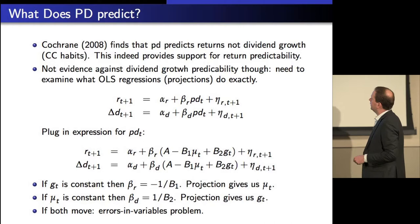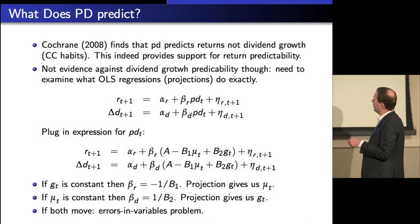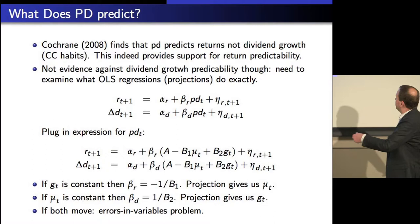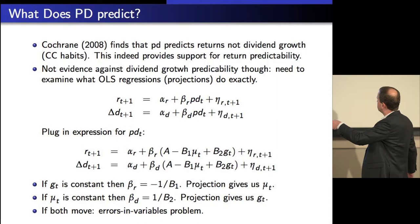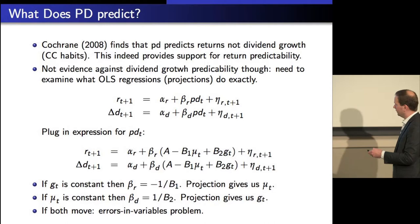If you plug this into the equation, you see why these OLS regressions can potentially miss something. If G is constant and I run an OLS regression of returns on the price-dividend ratio, I just get a nice coefficient and get the nice expected return variation back through the projection. The same is true if mu is constant for G. If both move, things get hard — because it's an errors-in-variables problem where one piece can be correlated with the other. So it's completely not obvious what can happen with these regression coefficients.